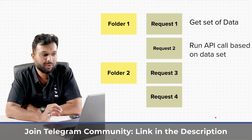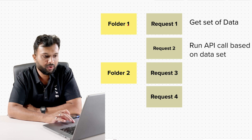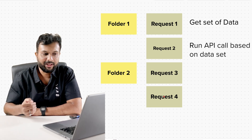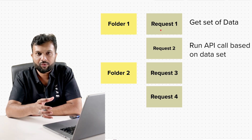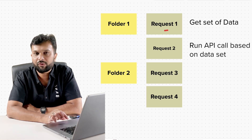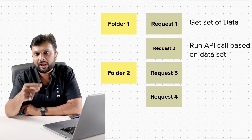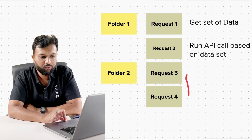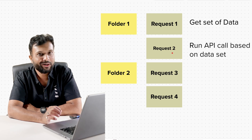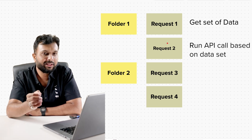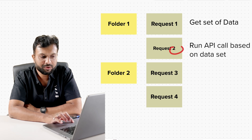In Postman, we have folders - folder 1 and folder 2 - with multiple requests inside each. From the first request we get a dynamic number of data, say 10 or 5 items. Based on the response from the first request, we have to execute a subsequent request that many times. Requests 1, 3, and 4 execute only once, but the second request executes based on the amount of data returned. This is not a collection iteration - it's dynamic looping.